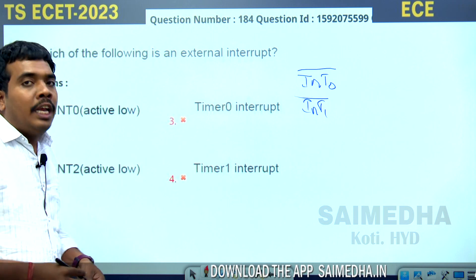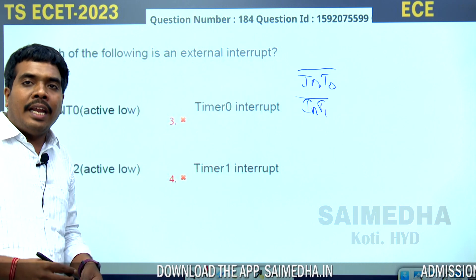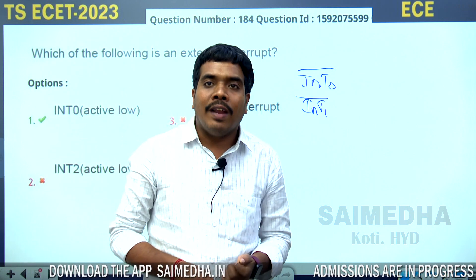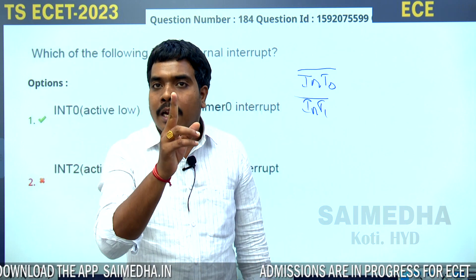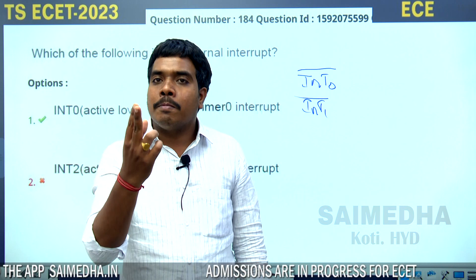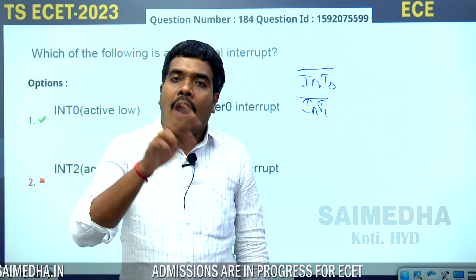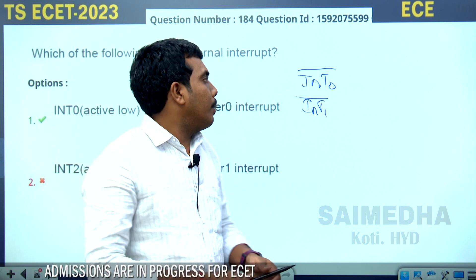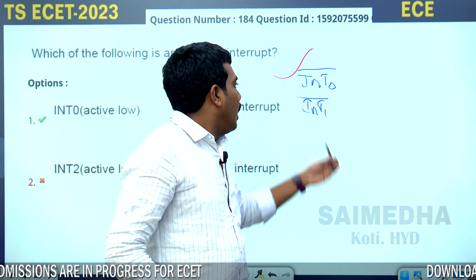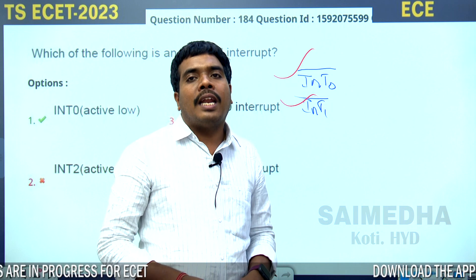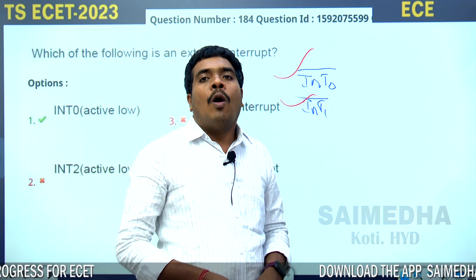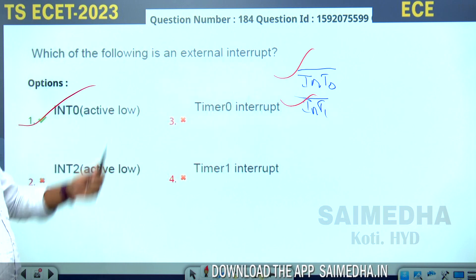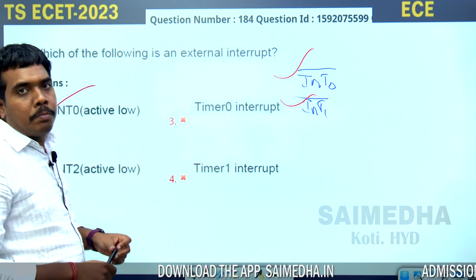The question is about external interrupts. The 8051 microcontroller has 5 interrupts: 2 are hardware interrupts and 3 are software interrupts. The hardware interrupts are the external interrupts — INT0 bar and INT1 bar. INT0 bar being low is the correct answer.